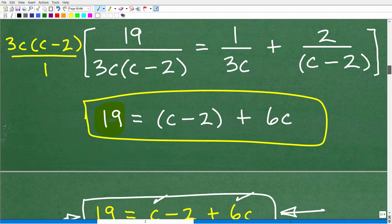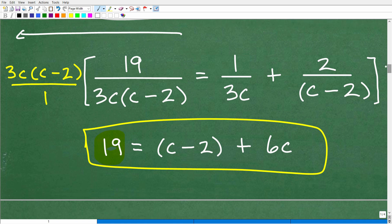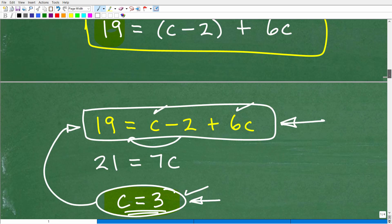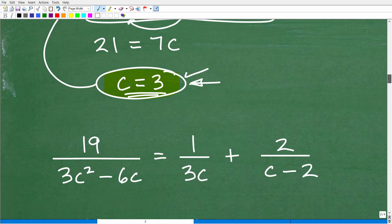and you end up with what we call an extraneous solution. Okay, that's an extra solution. Just know this, okay, in algebra, if you multiply both sides of the equation with an expression that has a variable in it, you can introduce what we call extraneous solutions, extraneous being extra solutions. So you must check that answer.